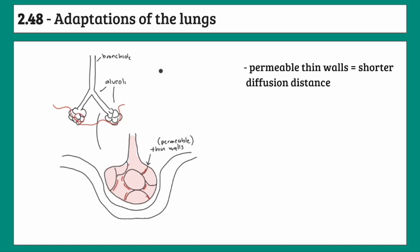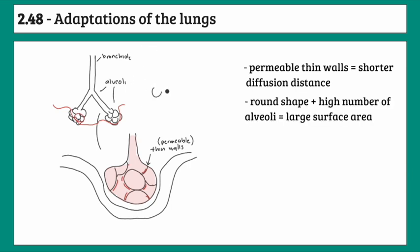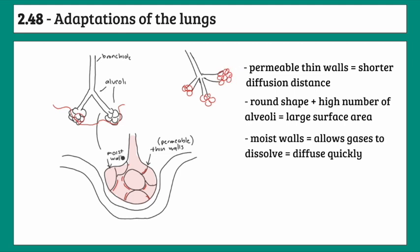Alveoli also have a large surface area — their shape is rounded, and there are a lot of them in the lungs. Bronchioles branch out, each with multiple alveoli, giving a large number overall, which increases the rate of diffusion. Also, the walls of the alveoli are moist — moist walls allow gases to dissolve, which helps them diffuse across both surfaces.